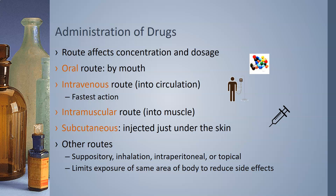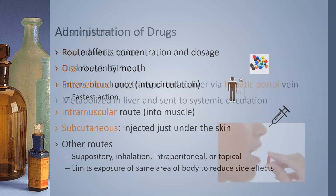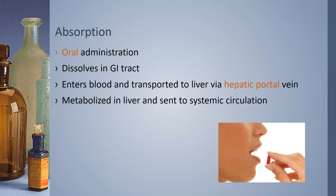The first phase of pharmacokinetics is absorption. Absorption is a factor in orally administered drugs. Once swallowed, these drugs must dissolve in the GI tract — in the stomach and intestines — and enter the bloodstream. Absorption mainly occurs in the small intestine, and from there the drug is transported to the liver via the hepatic portal vein. The liver metabolizes it, and whatever remains is sent to the systemic circulation.